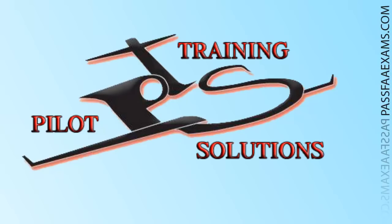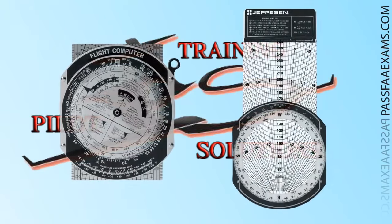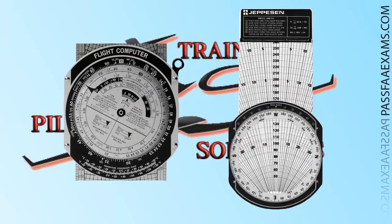One of our current customers has asked us to explain how to use the Manual E6B flight computer, as in our software we focus mainly on the electronic flight computer. Because using the Manual E6B for the test only guarantees a small chance of getting the right answer — the Manual E6B just lacks the precision needed to answer the knowledge test questions, as the answers are just too close to get the right one. But for the sake of being thorough, here is an explanation of the Manual E6B.